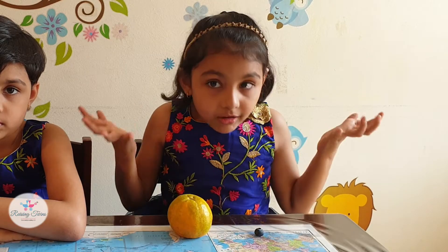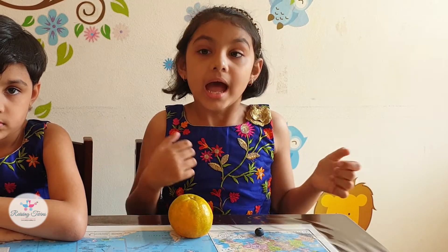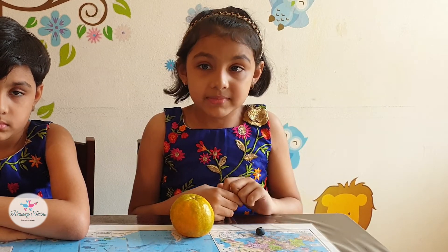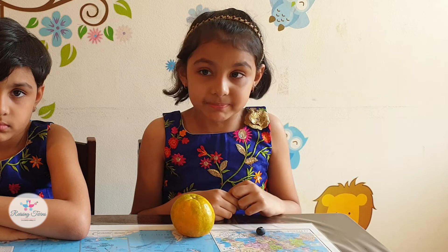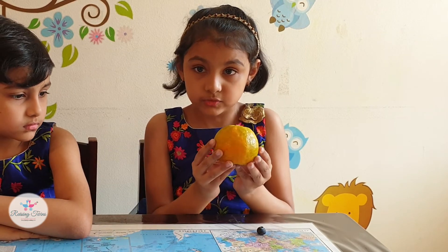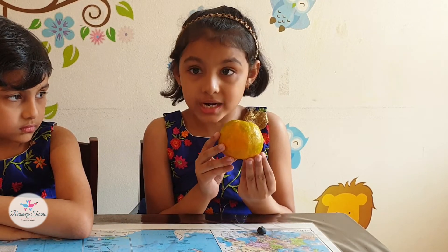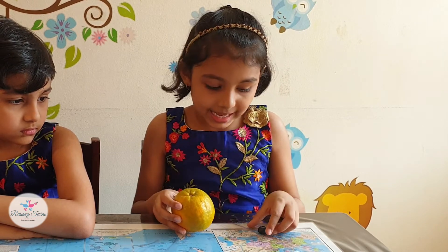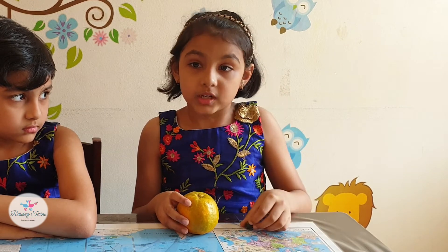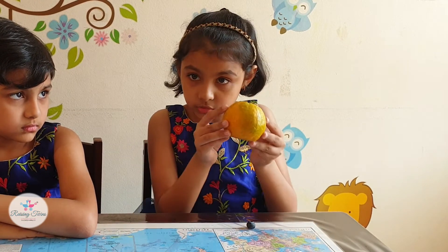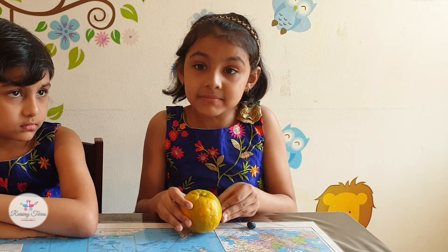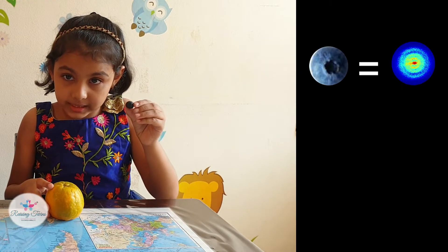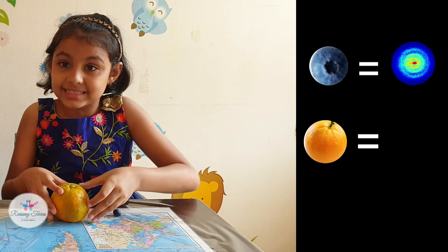How small is an atom? Atoms are ridiculously and unbelievably small. Let me explain it with a different perspective. Imagine that this orange fruit has only hydrogen atoms. Now we blow each of the atoms to the size of this blueberry. Then what should be the size of this orange fruit? It should be the same size as the earth. That means if this blueberry is a hydrogen atom, then this orange would be the size of the earth.